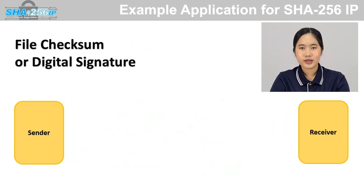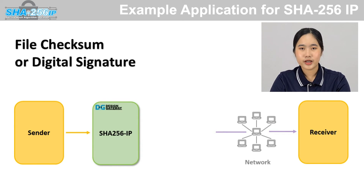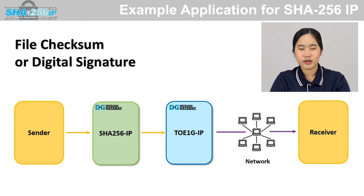Now, this block diagram shows you the example of how to use SHA-256 together with our network IP. The transmitted data is hashed by SHA-256 in the form of a file checksum or digital signature, then sent through the network with TCP/IP protocol implemented by TOE1G.